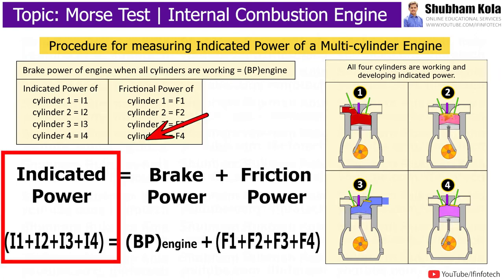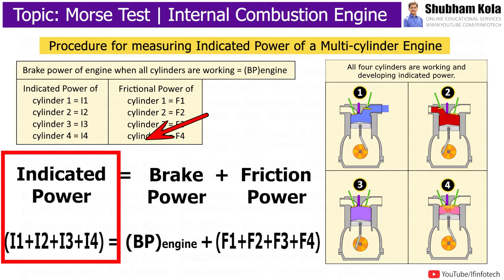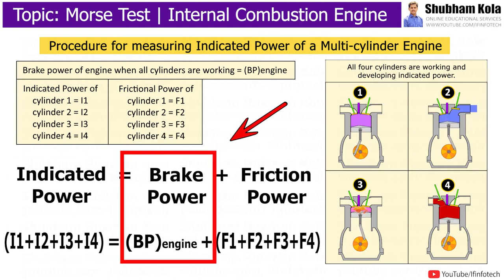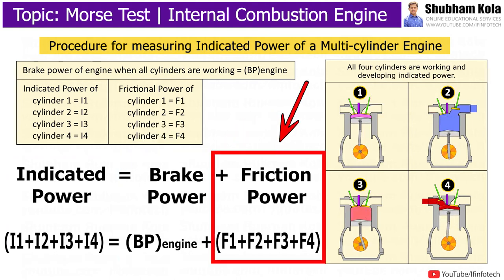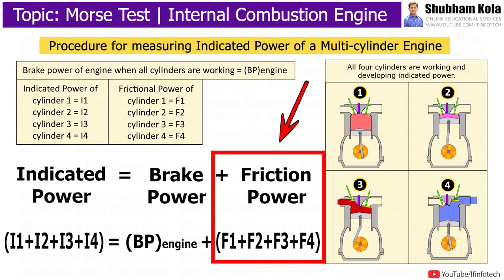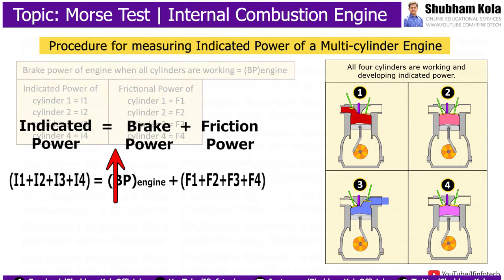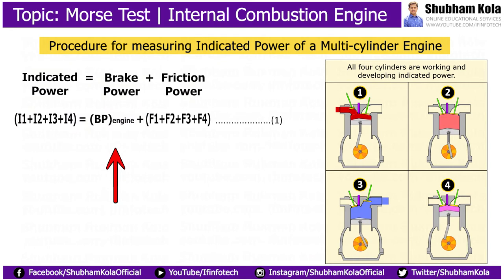Therefore, the total indicated power, i.e. i1 + i2 + i3 + i4, is equal to the total brake power of the engine when all cylinders are working, plus the total frictional power, i.e. f1 + f2 + f3 + f4. This is equation number 1.